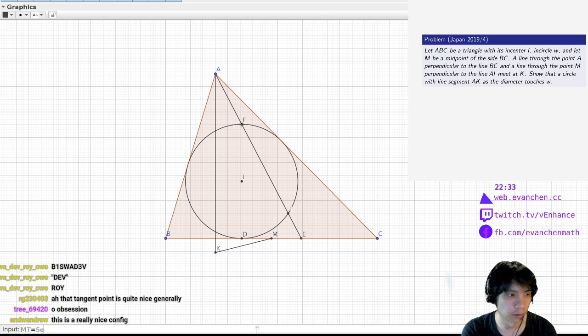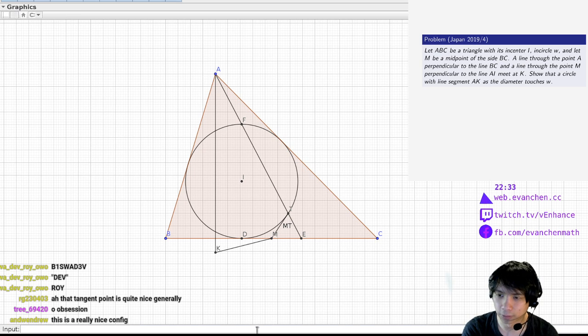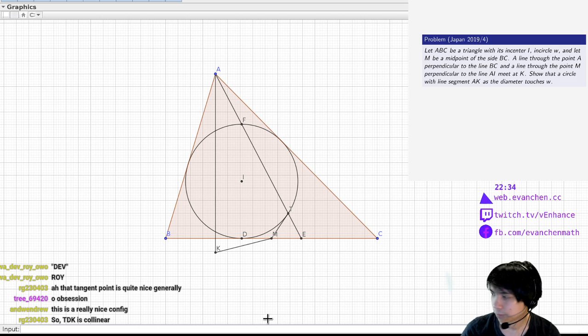So this is also a right angle because this is like a midpoint. So MT is also a tangent. This is, long story short, this is the configuration I used in my TST problem. So that's point T. The claim is that AKT is... okay, so KT looks like it's going to be linear too. Let me write all this down.